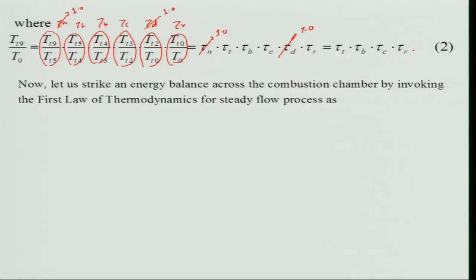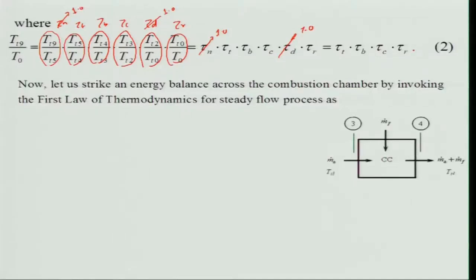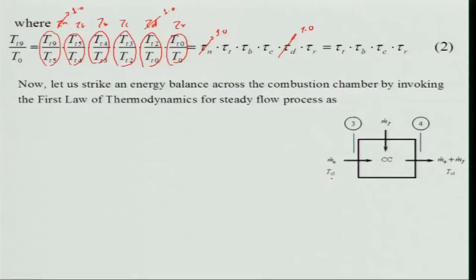Now let us strike an energy balance across the combustion chamber by invoking the first law of thermodynamics for a steady flow process. In aircraft, truly steady flow is an idealization — turbulence introduces unsteadiness — but we assume quasi-steady conditions. The combustion chamber has station 3 at inlet and station 4 at exit, where air enters, fuel is added and burned, and products exit.